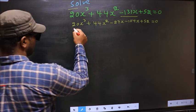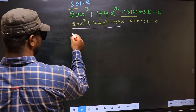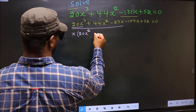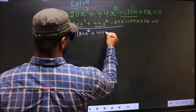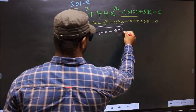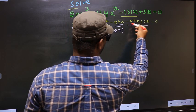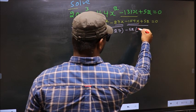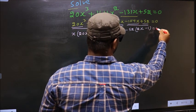What can be taken out common from the first three terms is x. So you get x(20x² + 44x - 27). What can be taken out common from the last two terms is -52, giving you (2x - 1) = 0.